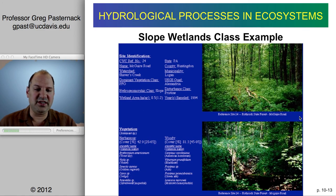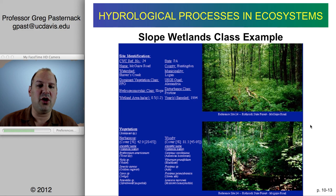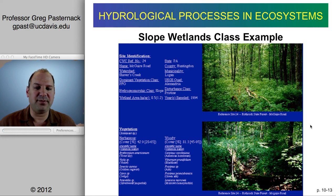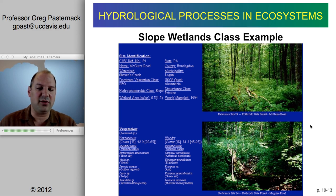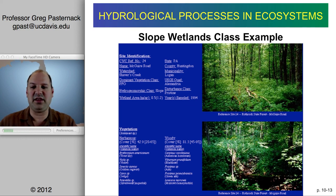These are some examples of photos. It's hard to photograph a slope wetland in a forested situation because you have a lot of forest cover and can't get a good overview. Generally there's just a wet meadow area supporting low shrubs or herbaceous vegetation.